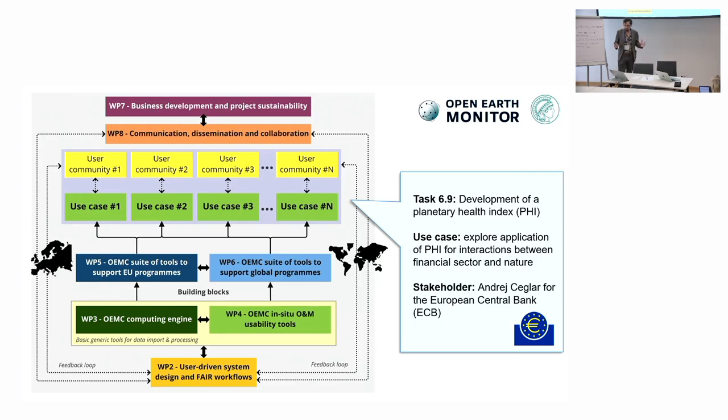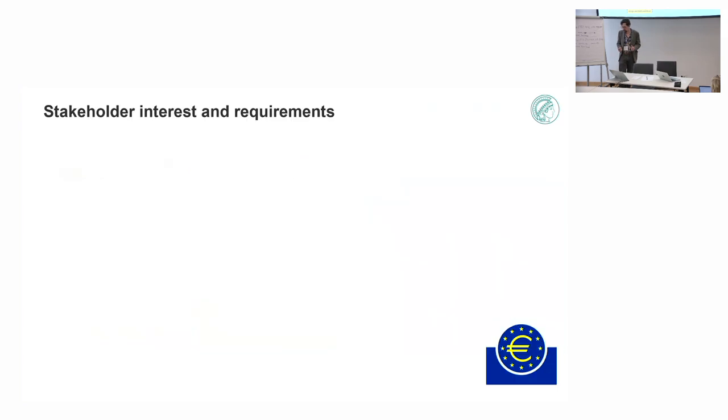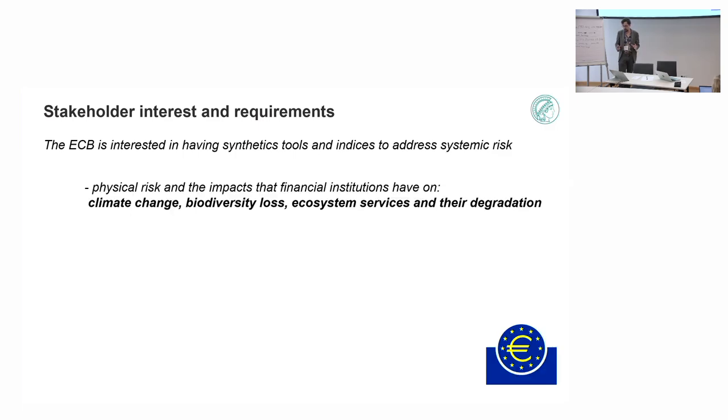Because we have a stakeholder from the European Central Bank, and they're interested in having tools to diagnose about these things. What the European Central Bank is interested in for now is having synthetic tools and indices to access systemic risk. They see physical risk and the impacts of finance. And they want to know the risk that financial institutions may have on climate change, biodiversity loss, ecosystem service, and their degradation. And they're interested in seeing also how those processes could affect financial institutions.